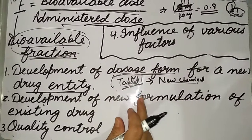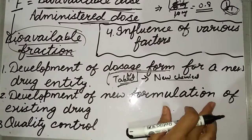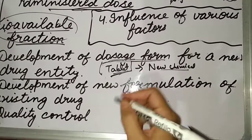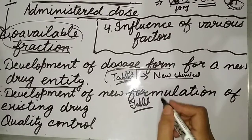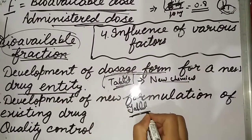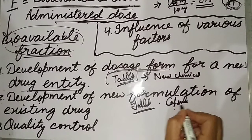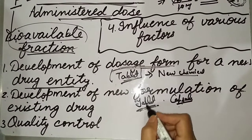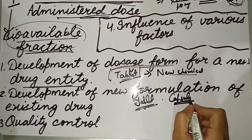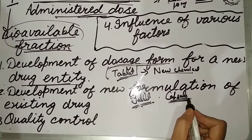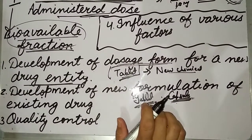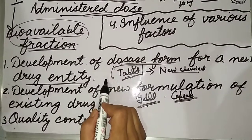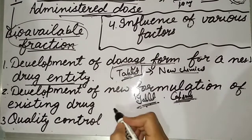The second important point where bioavailability studies are considered is the development of a new formulation of an existing drug. Suppose a tablet was already available for a drug, but now another company develops a capsule for the same drug. How will the previous tablet be compared with the new capsule? With the help of bioavailability. If this capsule depicts higher bioavailability compared to the tablet, then it will be employed for further use. So bioavailability studies are done for new formulations of existing drugs.